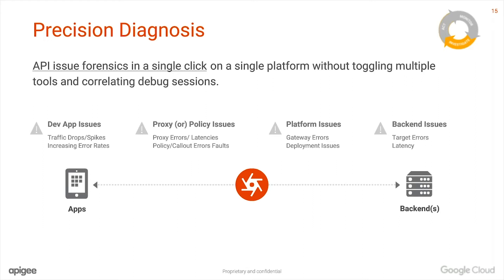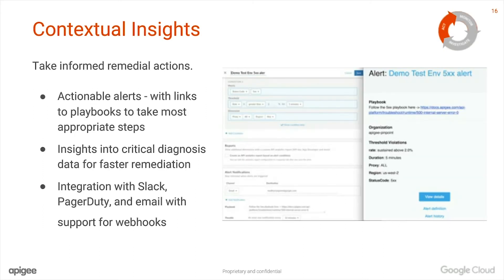Let's talk about contextual insights. We covered the monitor and investigate facets — now let's talk about the act piece. One of the singular important requirements we hear from customers again and again is: how do I get notified when things are broken? Notify me on the channel of my choice. Once I have a notification that something is broken, I want to be able to take the right action — not only knowing what's broken, but where it's broken, and getting the correlated information within a few clicks.